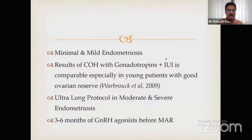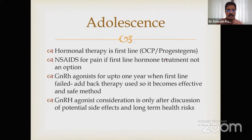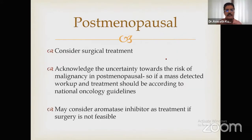For infertility with endometriosis, medical treatment has no role — neither pre- nor post-operatively for improving live birth rates. Controlled ovarian stimulation with gonadotropins and IUI is the approach. For adolescents, first-line treatment is the OC pill — do not prescribe NSAIDs as first line. NSAIDs can be given only if the patient cannot or is not willing to take OC pills. GnRH agonists cannot be considered in adolescents below one year of treatment. OC pills and dienogest are the best drugs for adolescents.